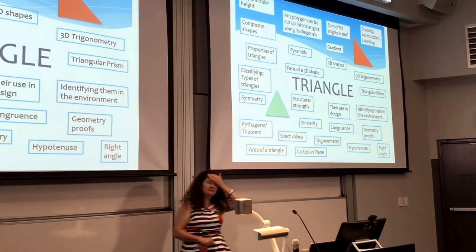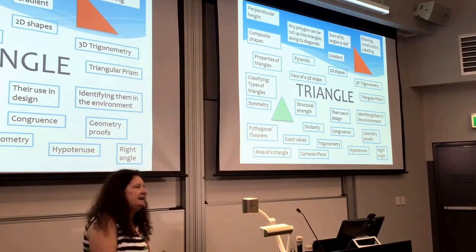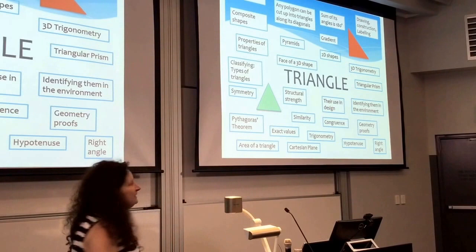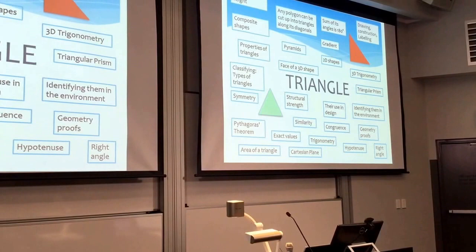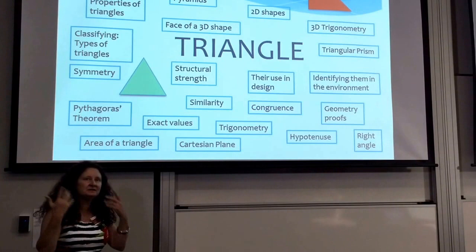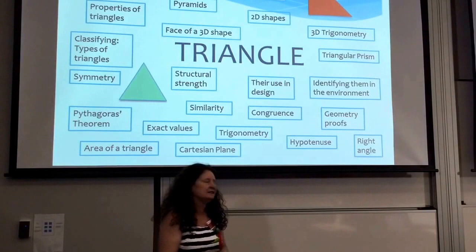I've done this in a classroom with some students — they were working in groups and had a big piece of butcher's paper, and I got them to come up with things related to parabolas, which I'll talk about a bit later. It's a brainstorming activity, and once students have got this list, they actually draw lines between the things that are also connected to each other. It's getting them to become conscious of the fact that there are so many connections there.